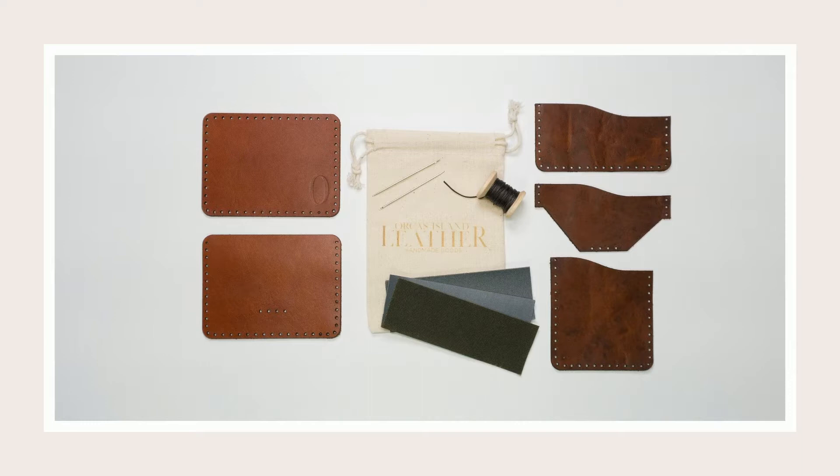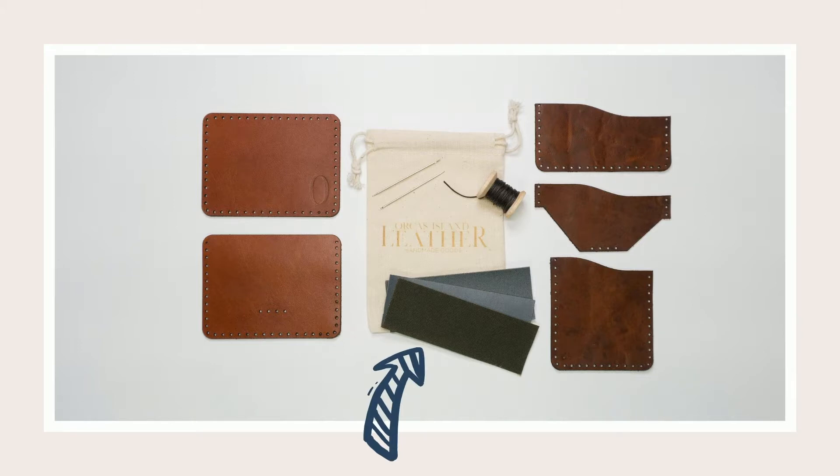First, let's look at what comes in the box. The Cascade wallet comes with five pieces of leather, a spool of thread, two needles, sandpaper and wax canvas, and from home you're going to need scissors or a knife and a lighter.